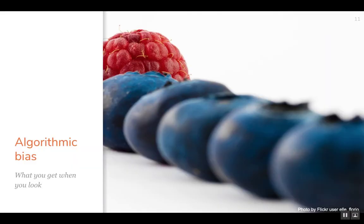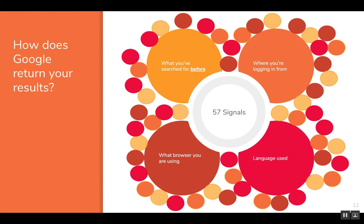Another thing to really be aware of is algorithmic bias. This is something we overlook often because we consider Google and other search engines to be pretty neutral. The problem with algorithmic bias is it really changes what we get when we look for something. The first thing to keep in mind is how does Google actually return our results? Remember, your internet is not my internet — it's always going to look different. My search results will probably be different than yours, and the reason that happens is because of their 52 or 57 signals — there are probably even more. Going back to those cookies ideas, it considers what you've searched for before and what you've been interested in.